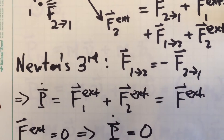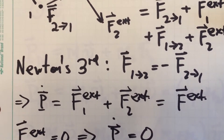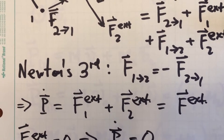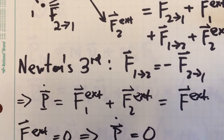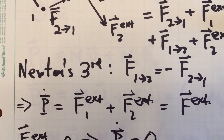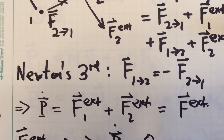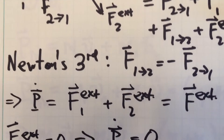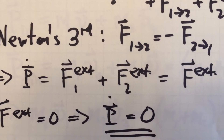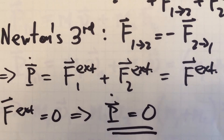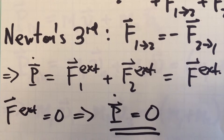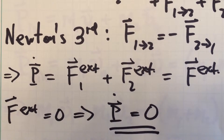Remember that according to Newton's third law, the force of particle one on particle two has to be equal and opposite to the force of particle two on one. So when we calculate the time derivative of the total system's momentum vector, it turns out to be equal to just the sum of the external forces.